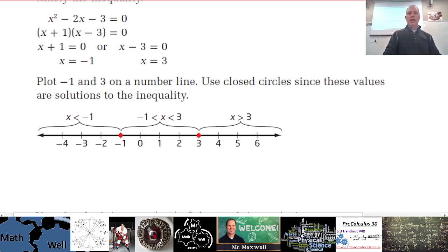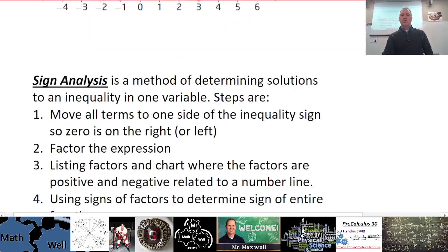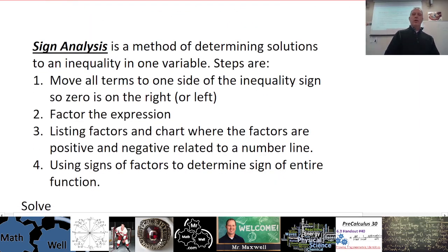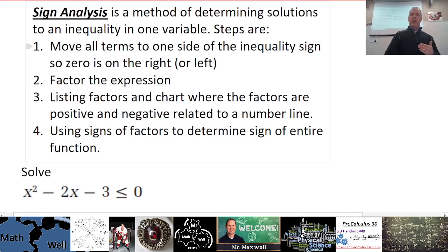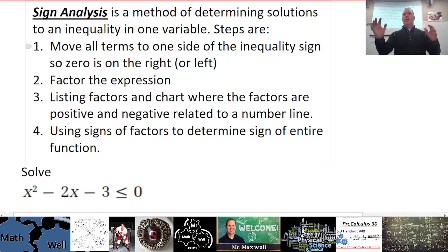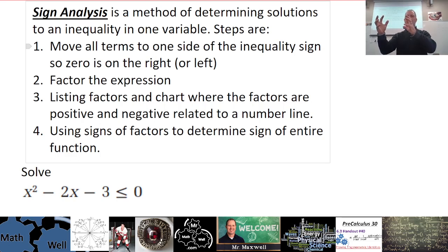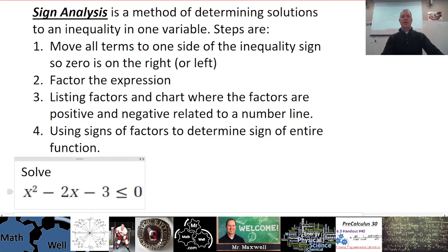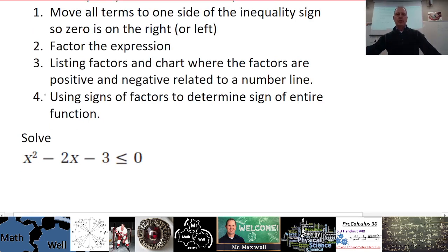Sign analysis in more detail: the process includes moving all terms to one side of the inequality sign so that you have zero on the other side. It's important to have a full expression of the polynomial with the inequality — less than, less than or equal to, greater than, or greater than or equal to — and zero on the other side. Once you do that, you factor the expression.